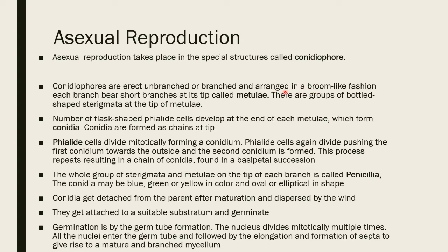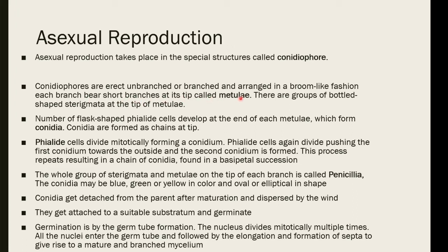The upper branches of the conidiophore can be opened like a broom. Each branch has short side branches called metulae. On each metula there are also smaller branches at the tips, which are groups of bottle-shaped sterigmata. These bottle-shaped sterigmata are also called phialide cells and develop at the end of each metula.